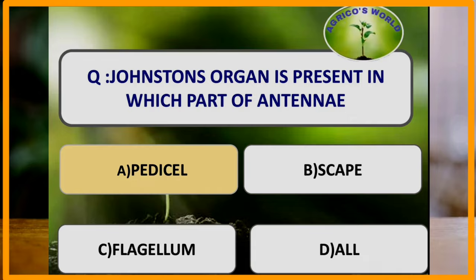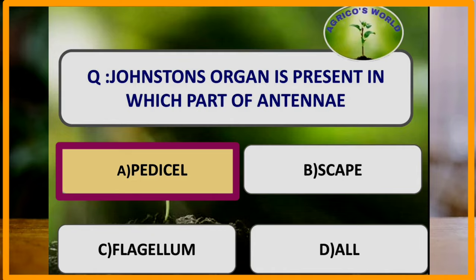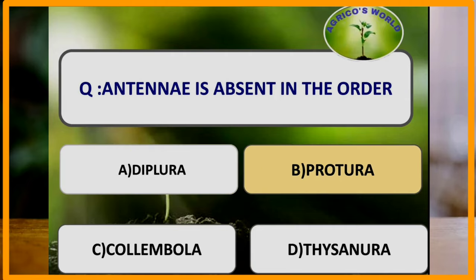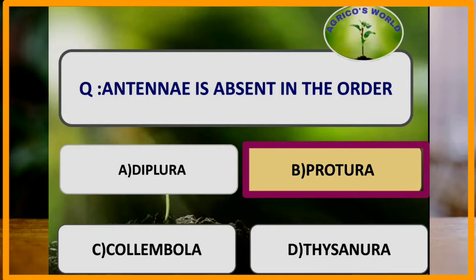Johnston's organ is present in which part of the antennae? Johnston's organ is present in the pedicel of the antennae. Johnston's organ is a special auditory organ present in the second or middle segment of the antennae, that is the pedicel. Antennae are absent in which of the following orders? Antennae are absent in the order Protura and also in the class Arachnida.